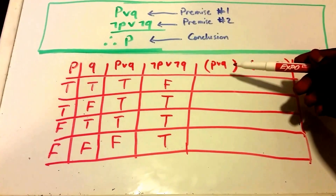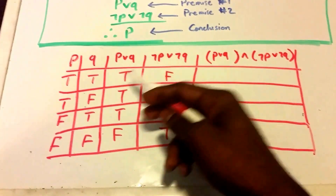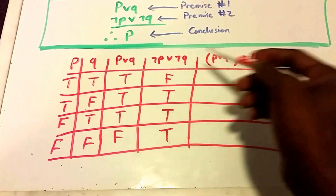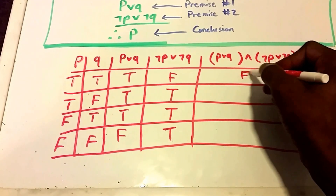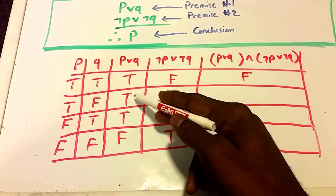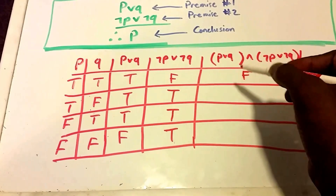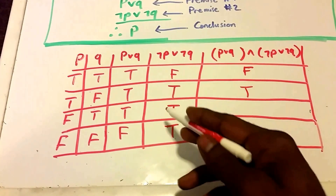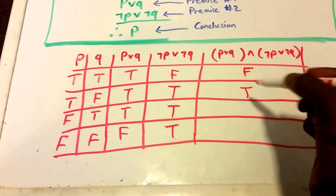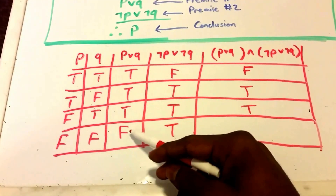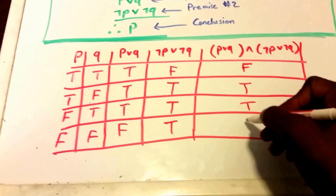Next up, we have P or Q and not P or not Q combined. We can use those two columns to figure this out. P or Q is true, and not P or not Q is false — so that makes this false. Then P or Q is true and not P or not Q is true, so this is true and true, which is true. Here P or Q is true and not P or not Q is true, so this makes true. And then P or Q is false and not P or not Q is true — so that makes this statement false.